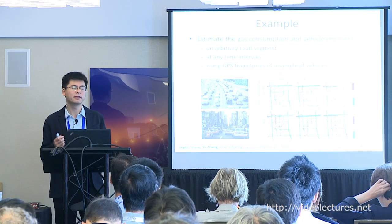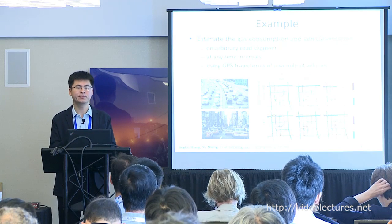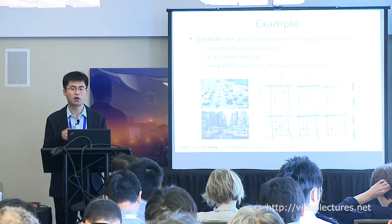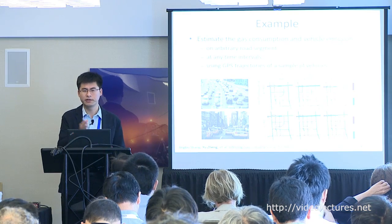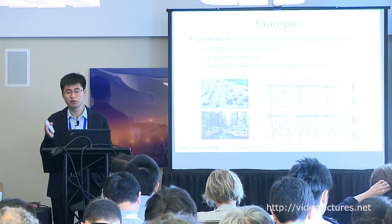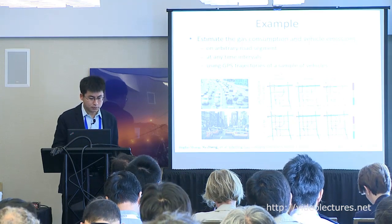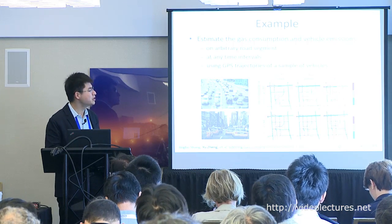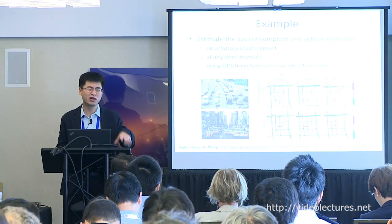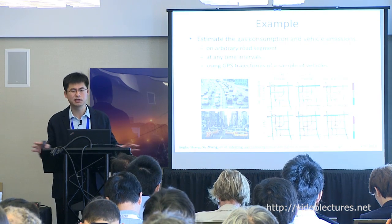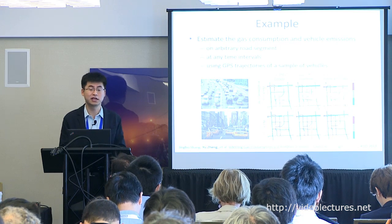We also combine point-of-interest data, road-level data, and meteorological data — it is a data fusion problem requiring multiple datasets. This is a very challenging task: it is not traffic prediction on one road segment, but across tens of thousands or hundreds of thousands of segments throughout the entire city.